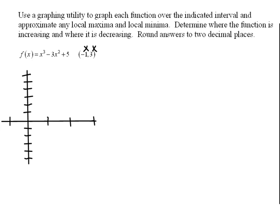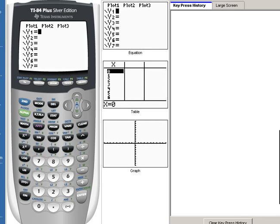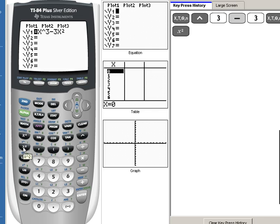Well, we can go ahead and we can put that into our calculator and see what that thing looks like. So in my calculator screen, I'm going to graph x to the third power minus 3x squared plus 5.